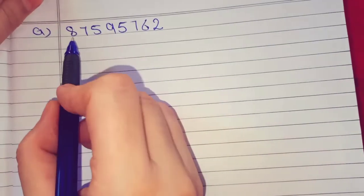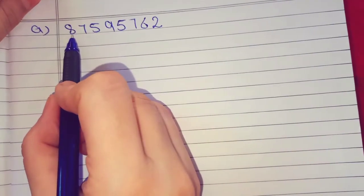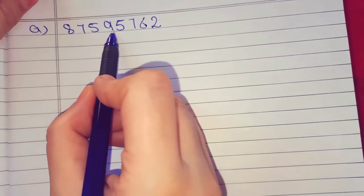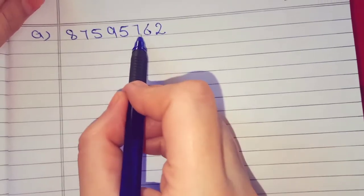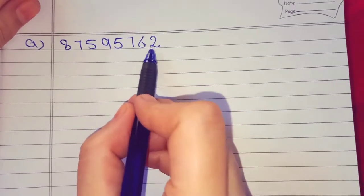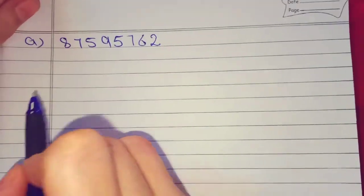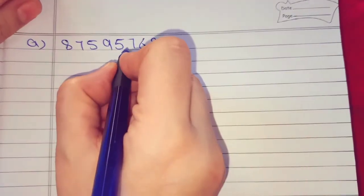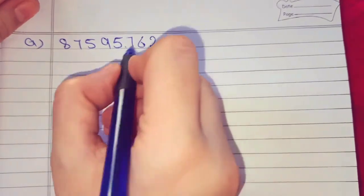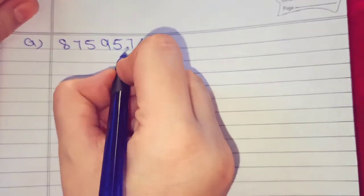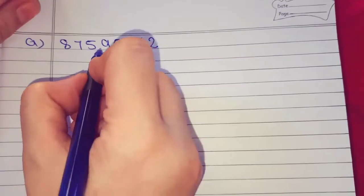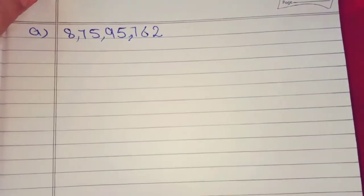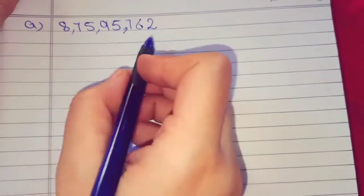First part mein hamare paas figure hai: 8, 7, 5, 9, 5, 7, 6, 2. Chaliye commas put kar lete hain jaldi se. Indian system ke accordingly: 3 ke baad comma, 2 ke baad comma, aur 2 ke baad comma.